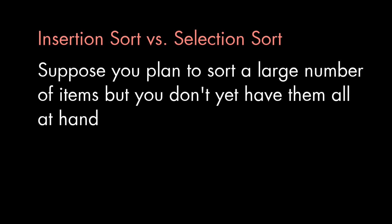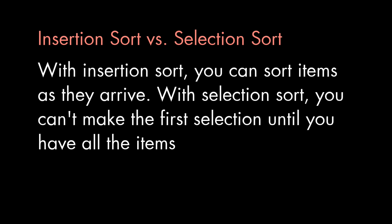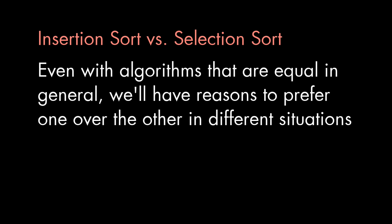But now suppose you're sorting thousands of folders that are being brought in a few piles at a time from different places. Well, with insertion sort, you could go ahead and get started with the first folders that arrive and then insert the others when they show up. With selection sort, you can't select the first folder until you have all of them to look through. So neither sort is especially fast. But in some circumstances, one might be preferred over the other.